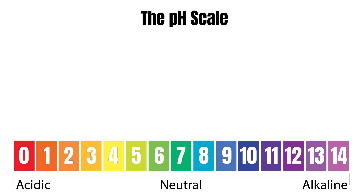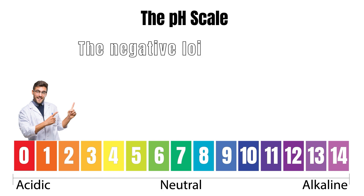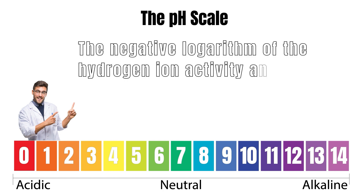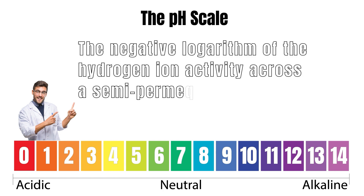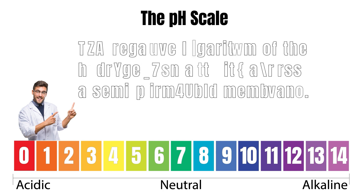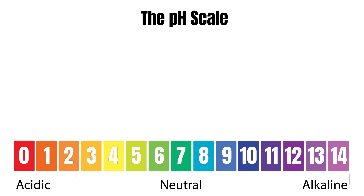One of the most common chemical properties we encounter daily is pH. While the scientific definition of pH is the negative logarithm of the hydrogen ion activity across a semi-permeable membrane — meaning how many hydrogen ions are released when a material is dissolved in water — it's easier to understand it as a measure of how acidic or alkaline a substance is. It is measured on a scale of 0 to 14.